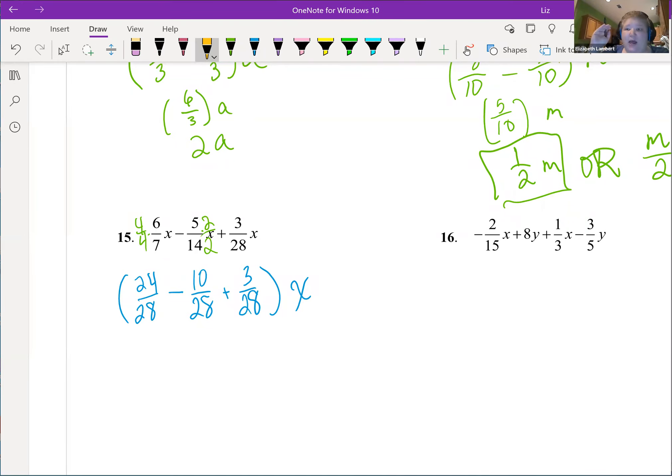If that thought really bothers you, this is why for the longest time when I was first getting used to this I always change subtraction to adding the opposite. So now it is plus negative 10 28ths. Now it's all addition, I can do it in whatever order I want because the negative is now stuck on the 10, not a subtraction floating in between.